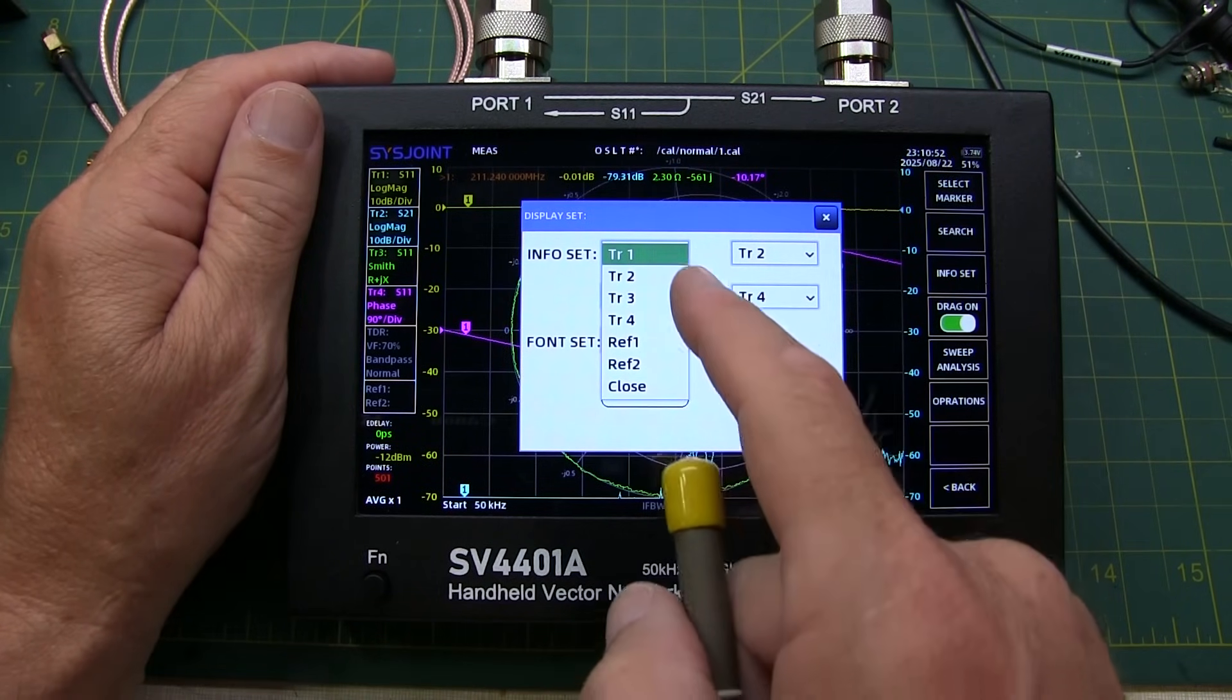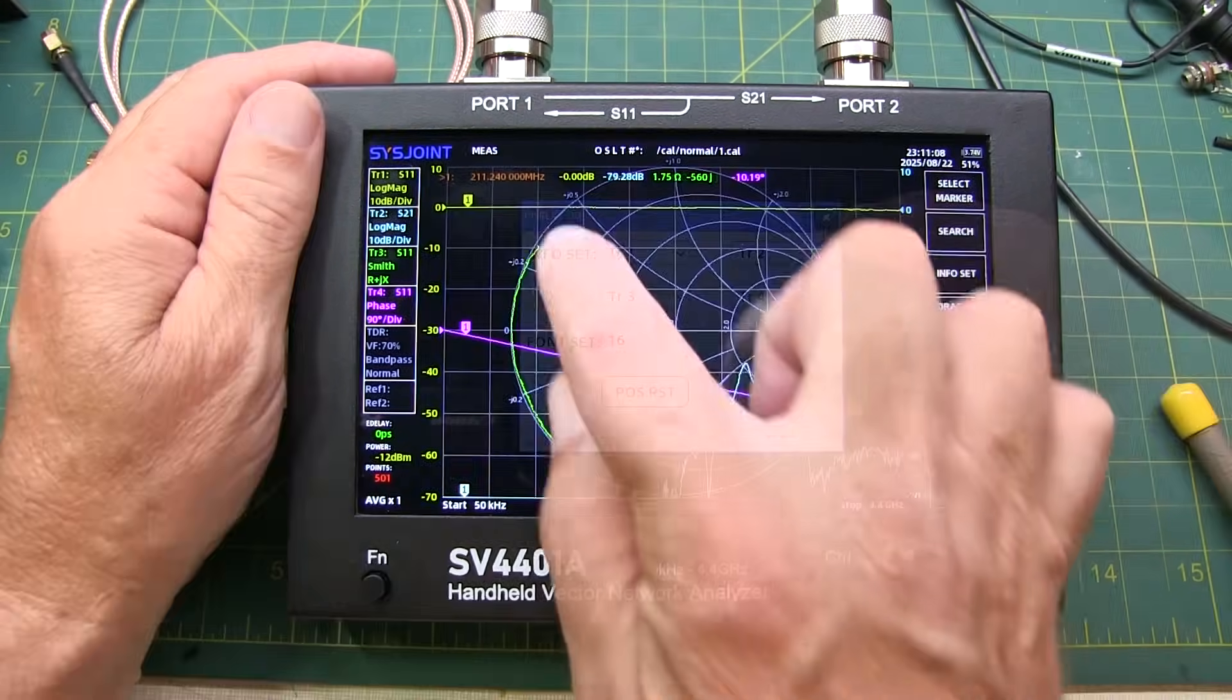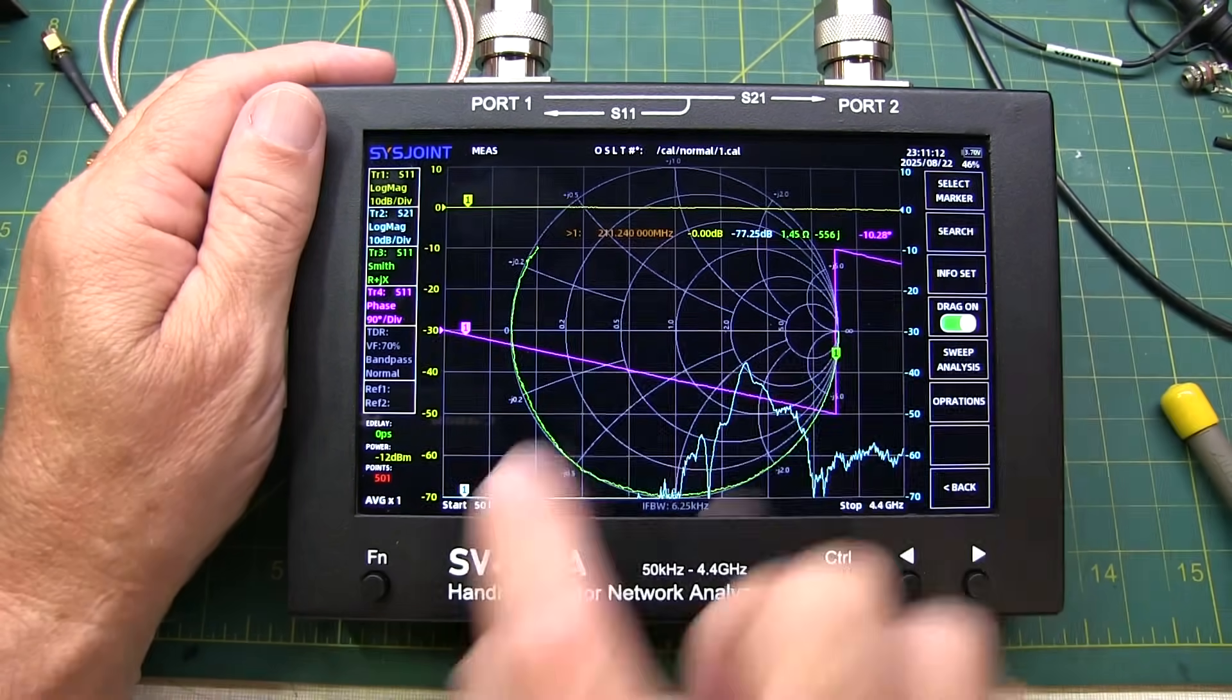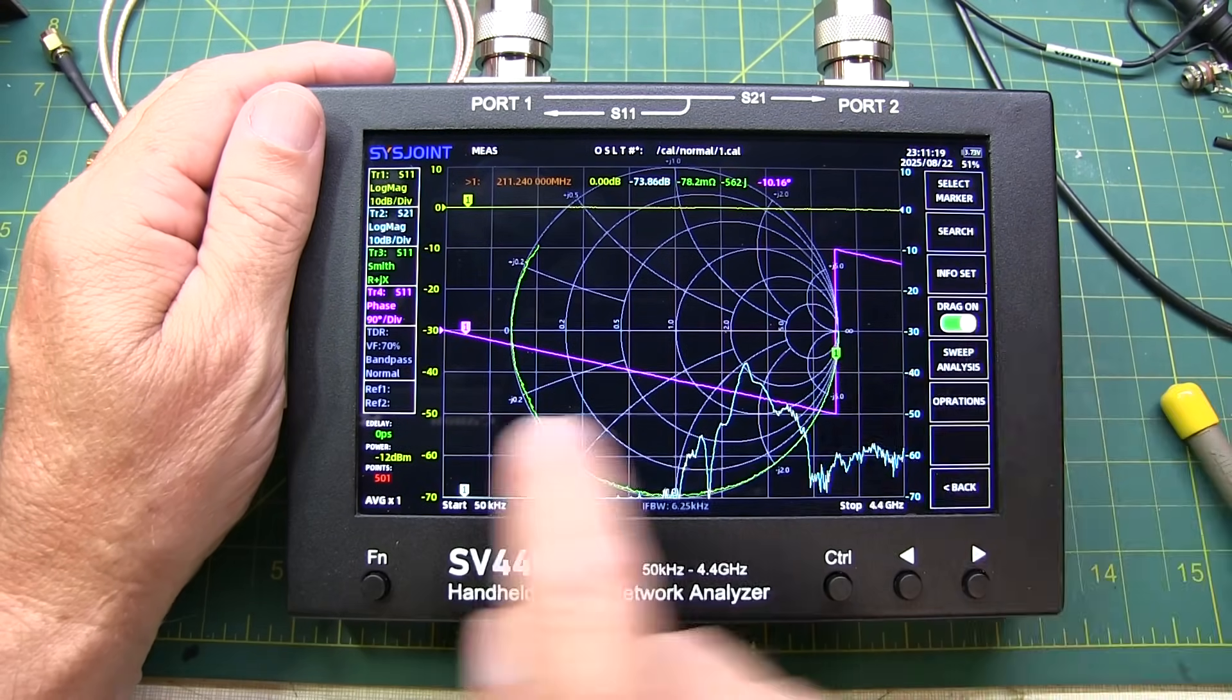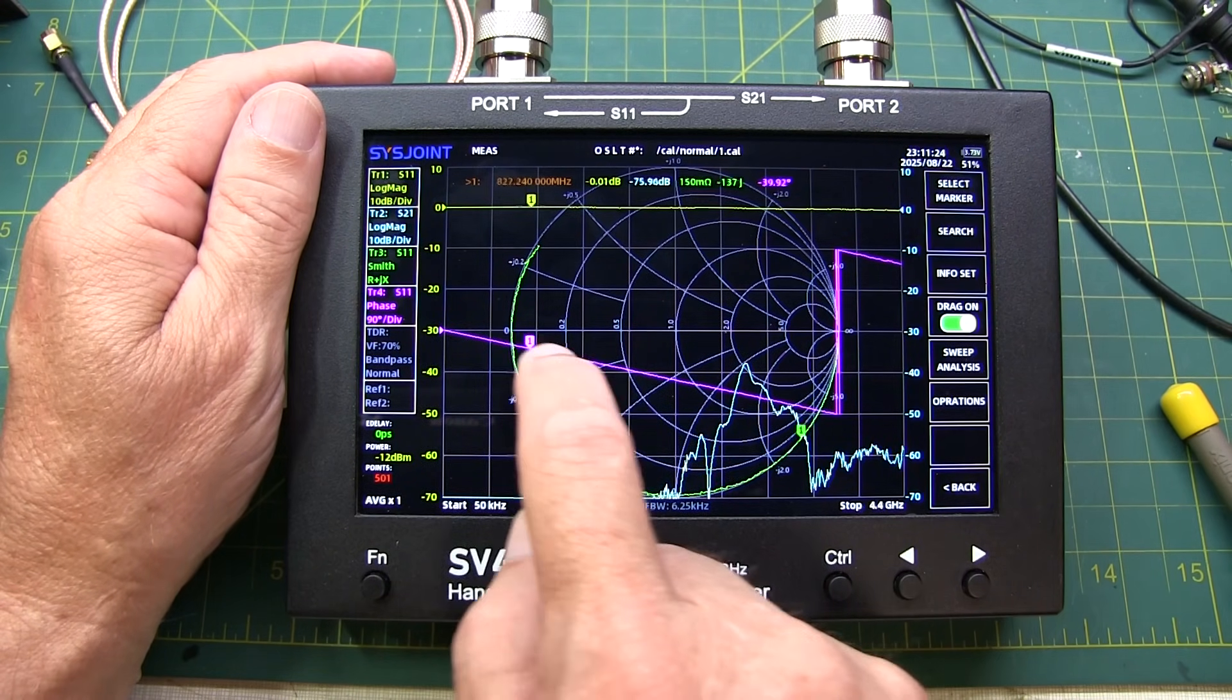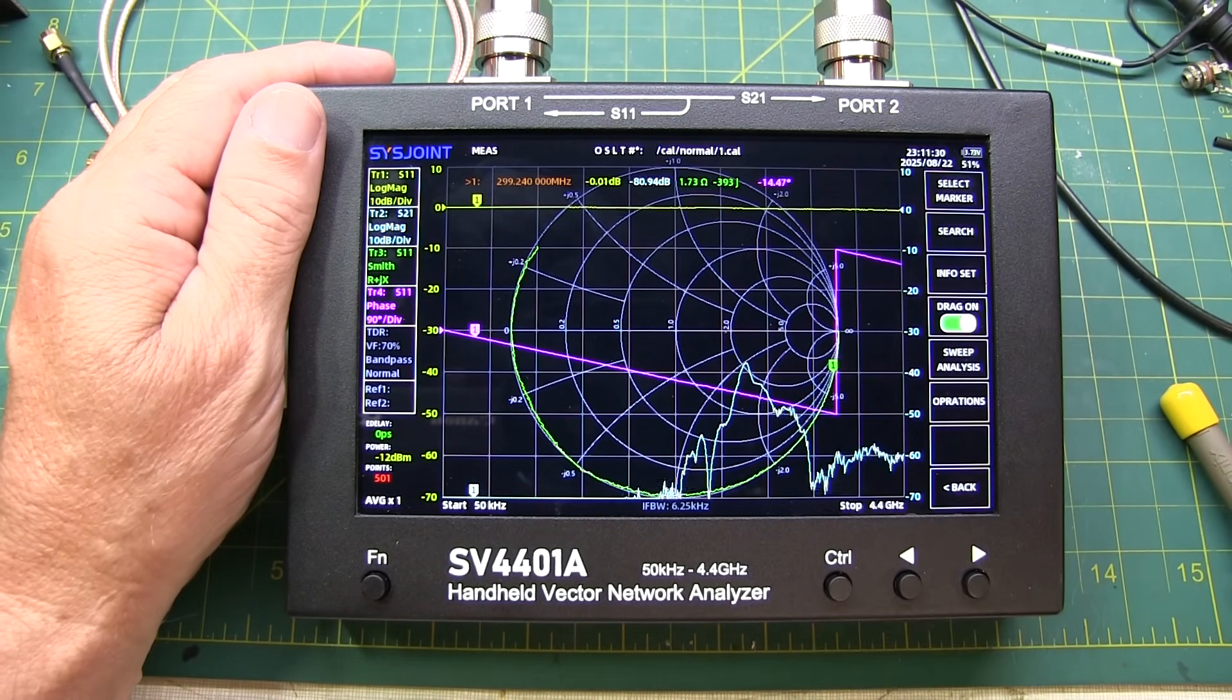So you can pick and choose which of those are going to be displayed up in the display area. You can use your finger to move where the marker readouts land on the screen just in case they happen to be in the way of what you're trying to measure. And if this drag on slider is turned on, you can actually use your finger to drag the marker positions in frequency with your finger. Of course, you can always use the left and right arrow buttons here to move the marker position as well.